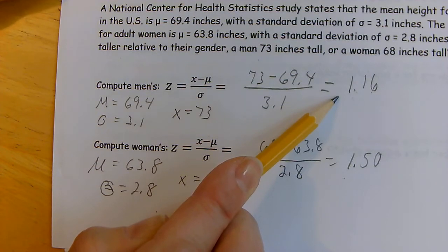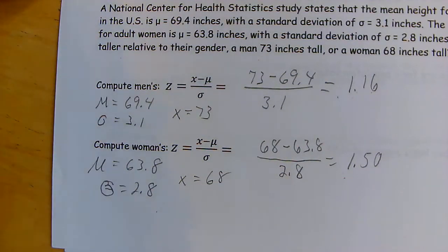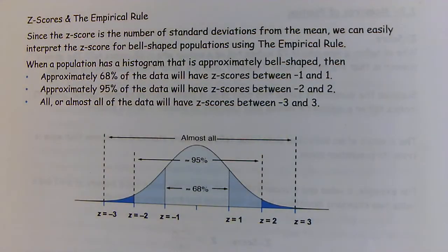So z-score shows how many standard deviations above or below the population mean. You can also use the empirical rule with these numbers.